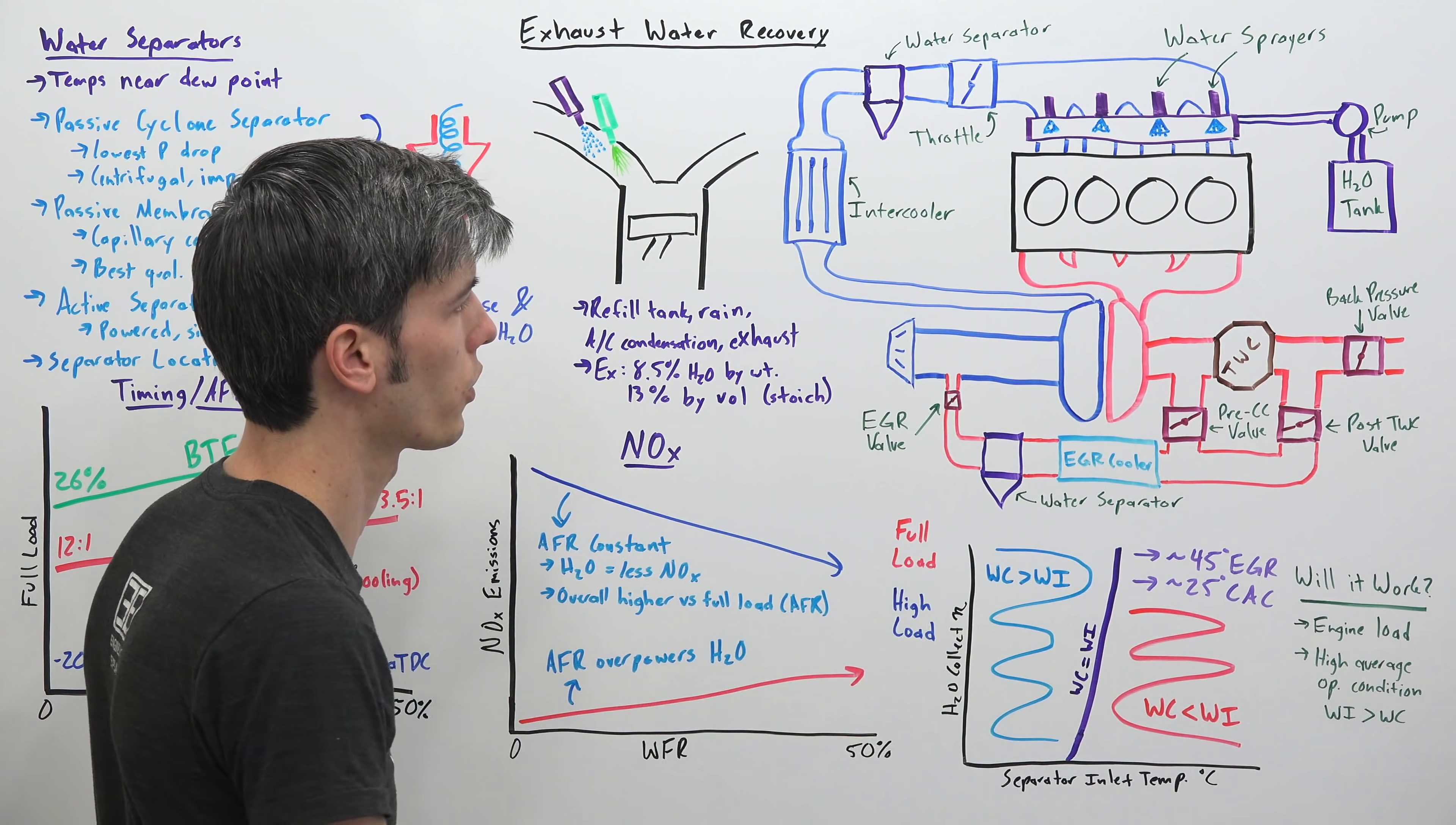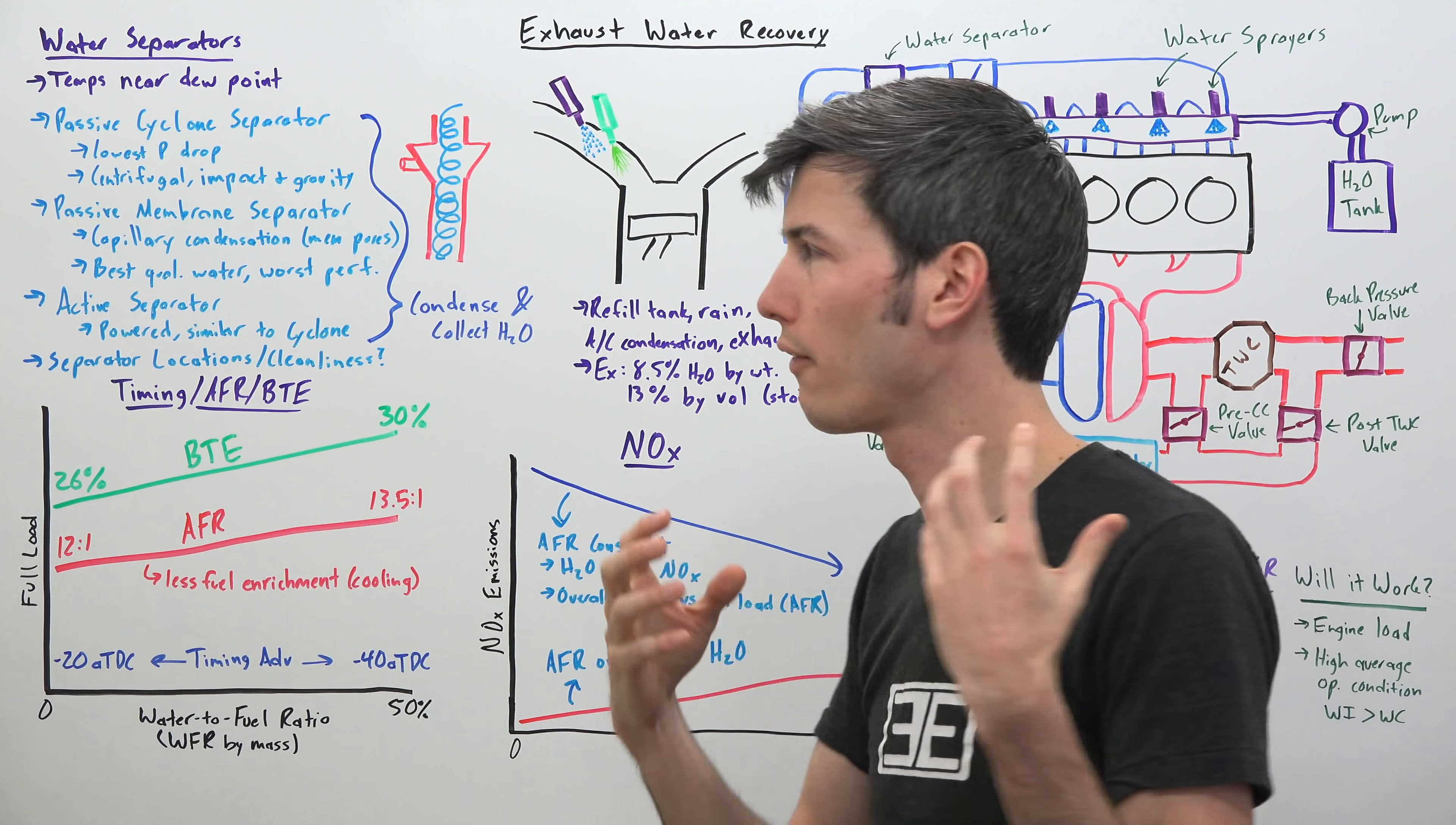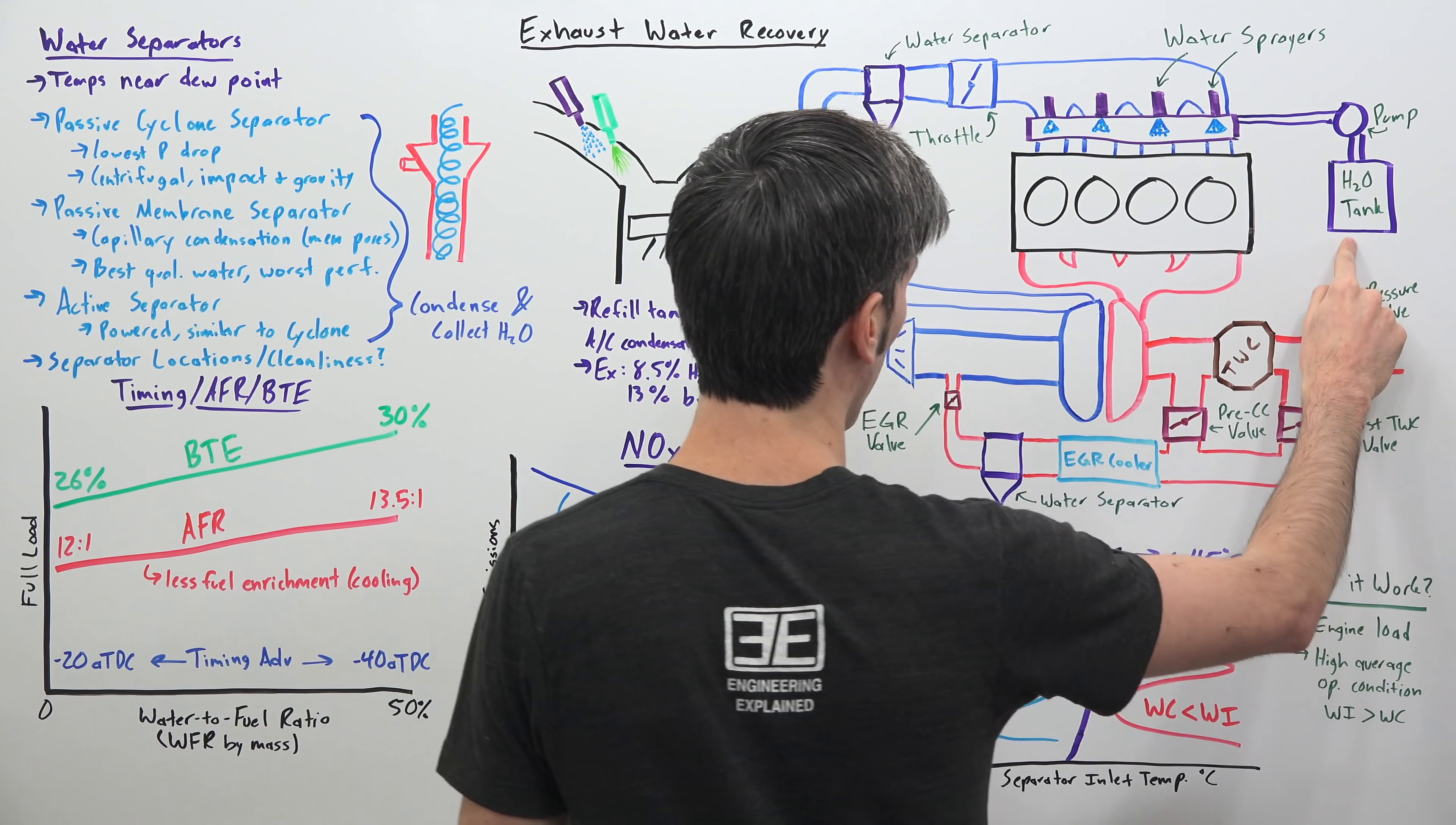Now we're not going to get into all that much detail of how these water separators work. But in the study they tried using three different kinds of water separators. And one important thing to note is that the locations are important because you have to have the temperatures of that air that's flowing into the water separator be near the dew point. The dew point meaning the temperature at which the water molecules will change from vapor and start to condense. And so that condensation is what you will then collect and use and send to a tank which you can then inject that water into the engine.